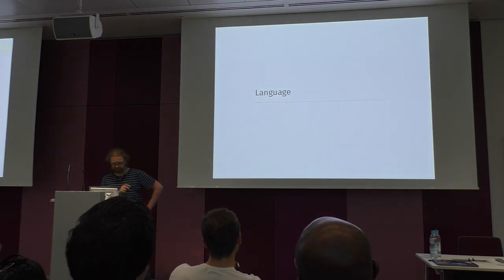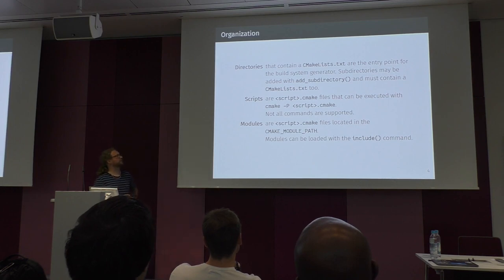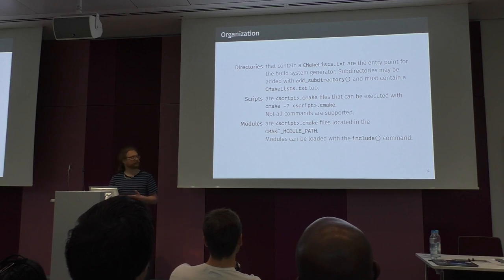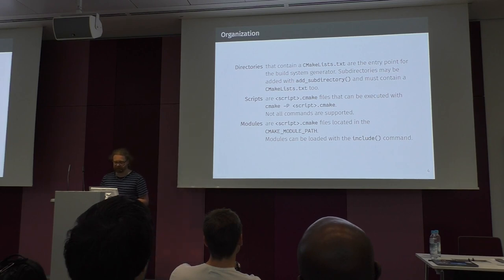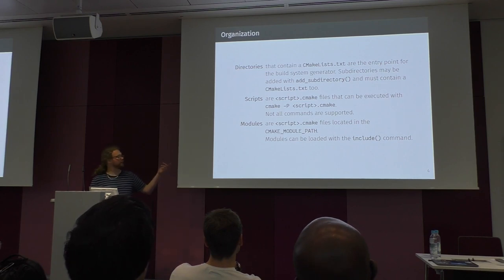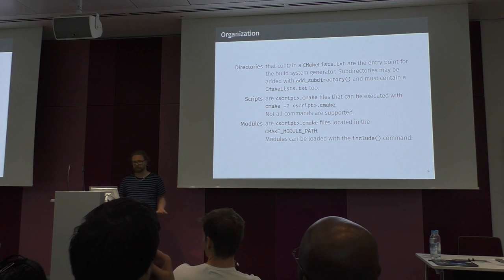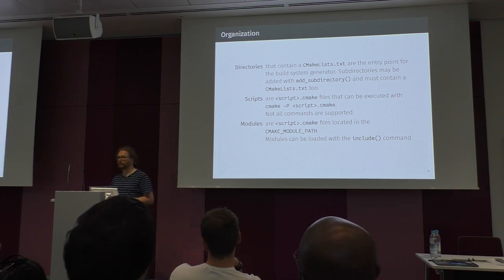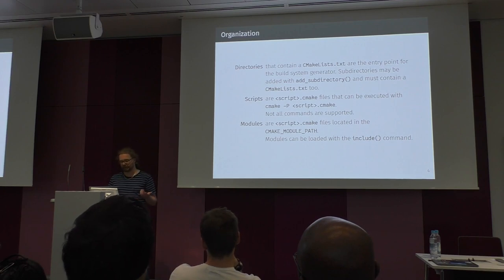CMake is organized in three different ways. When you have directories that contain a CMakeLists.txt file, this is the entry point for build system generation. We can add subdirectories with the add_subdirectory command, which also need to contain a CMakeLists.txt file. Scripts can be executed with the -P command line flag — this runs CMake in just the language processor mode, and commands like add_executable are not available.